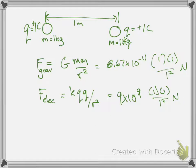The key takeaway is that electric forces are much larger than gravitational forces. Two electrons one meter apart will always have a much greater electric repulsion than gravitational attraction. This relates to the four fundamental forces: the strong force is the largest, then the weak force, then the electric force, and the gravitational force is by far the weakest.